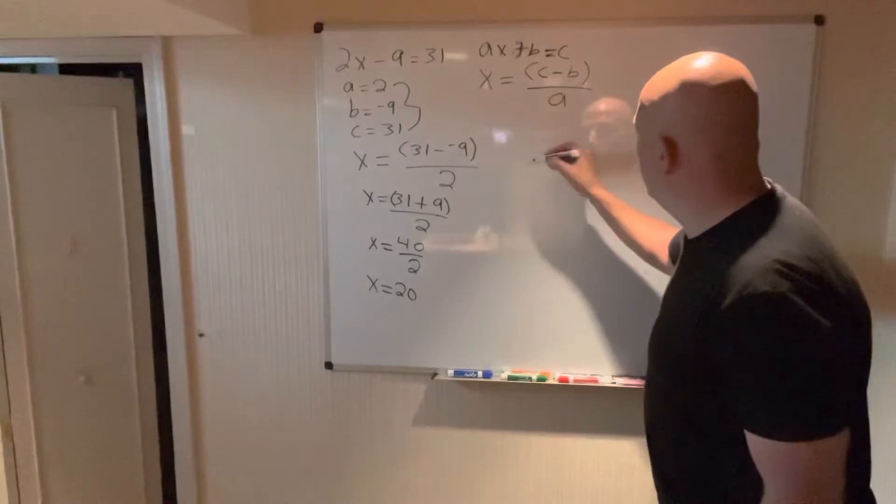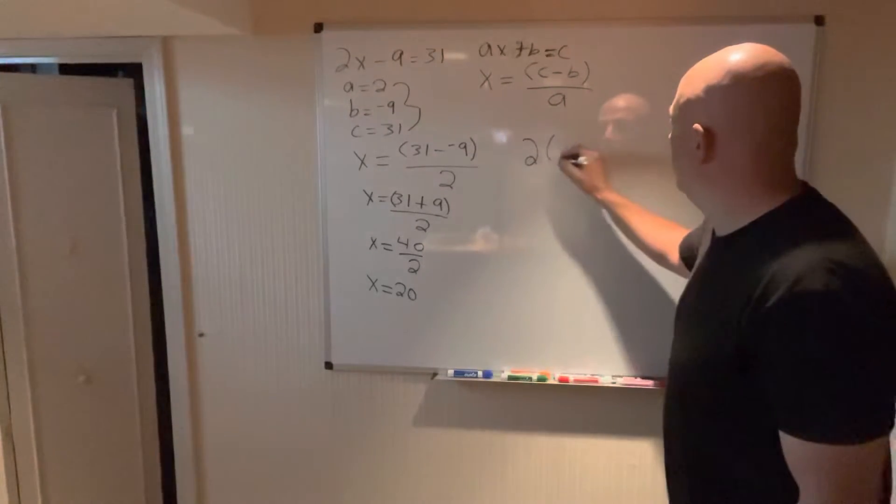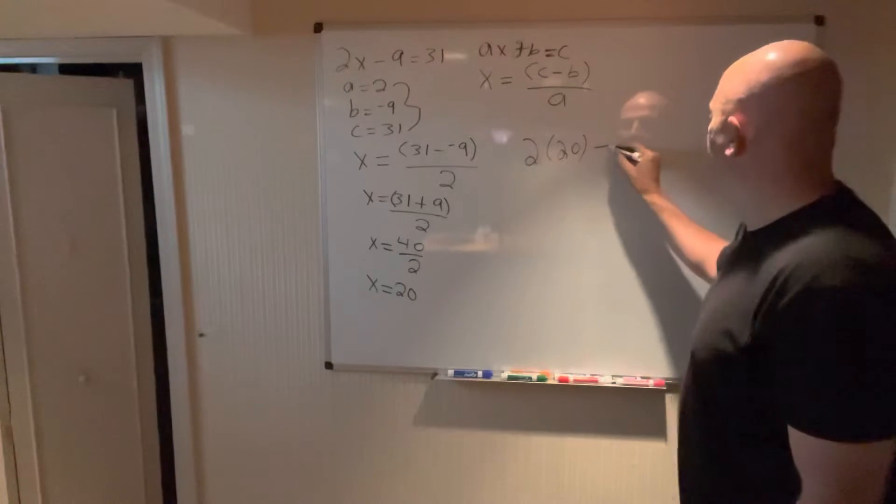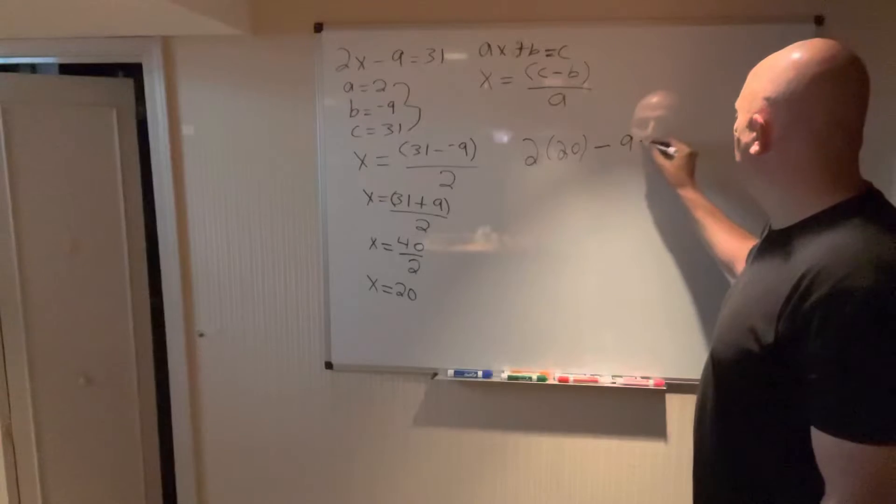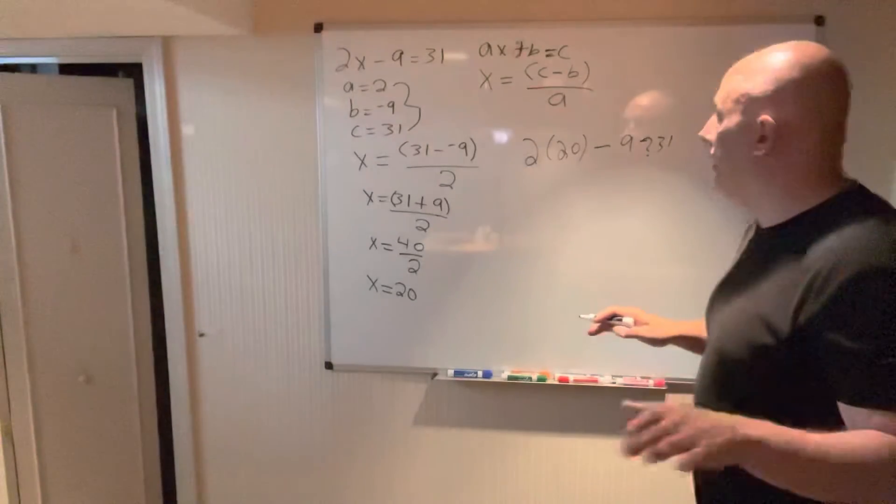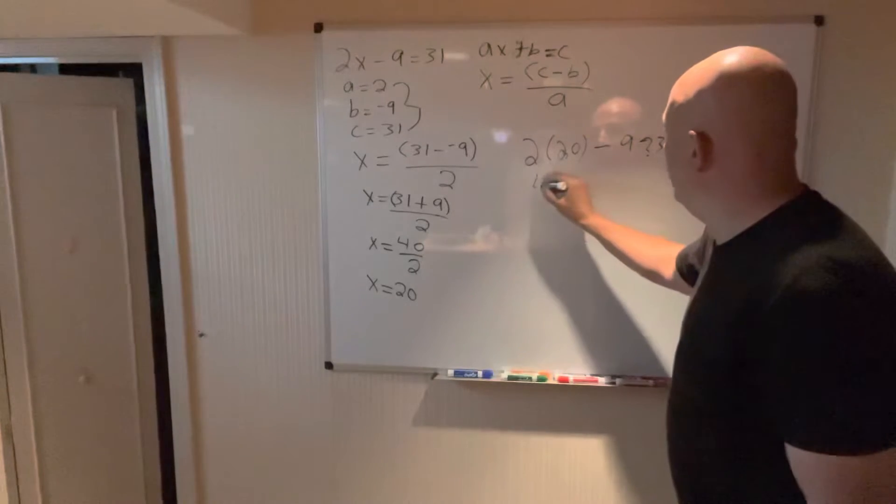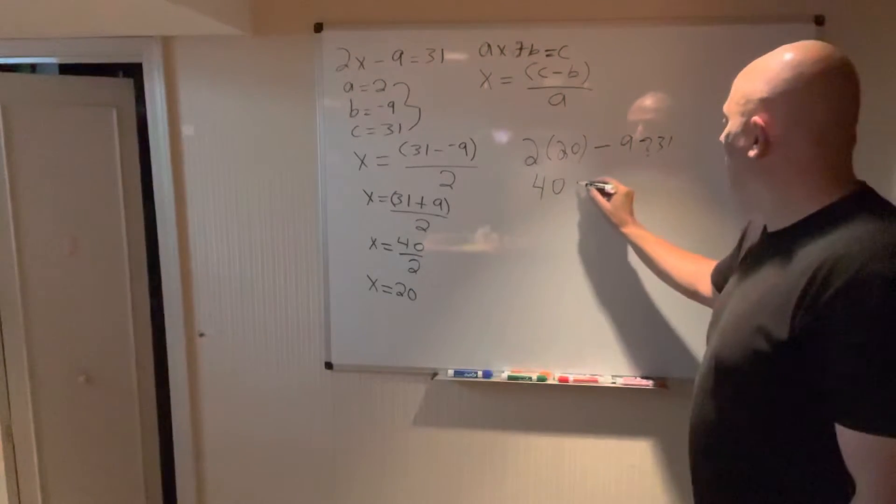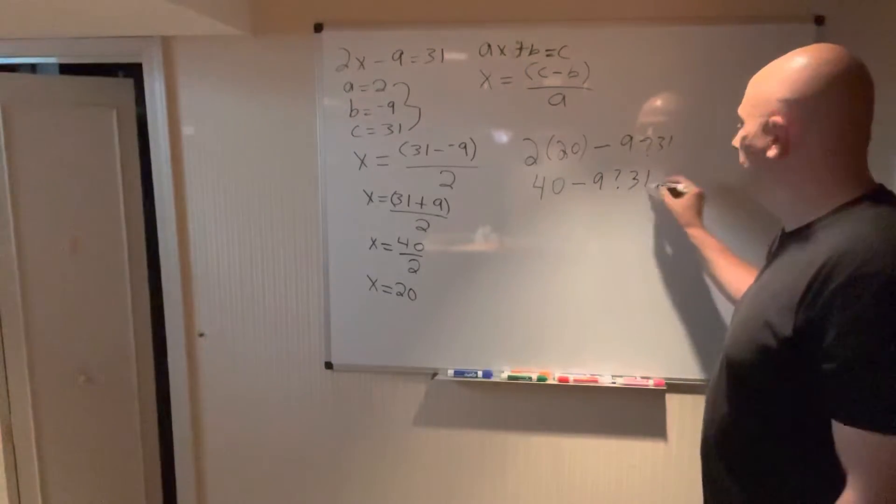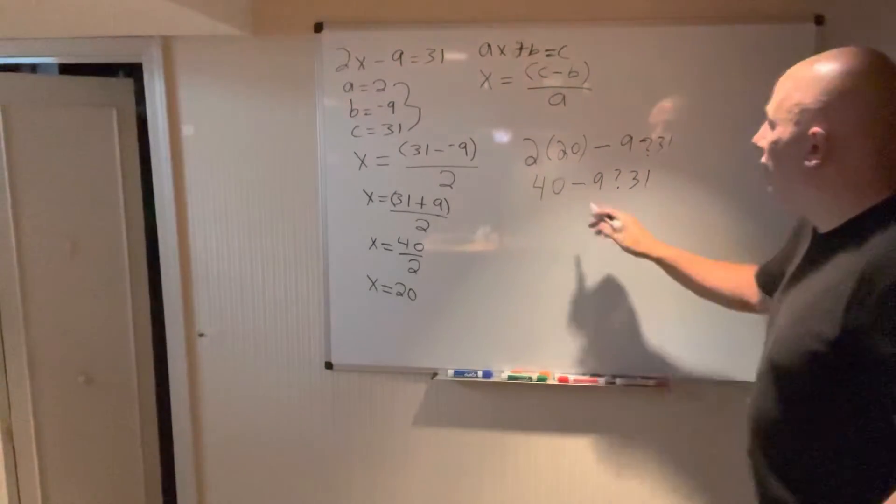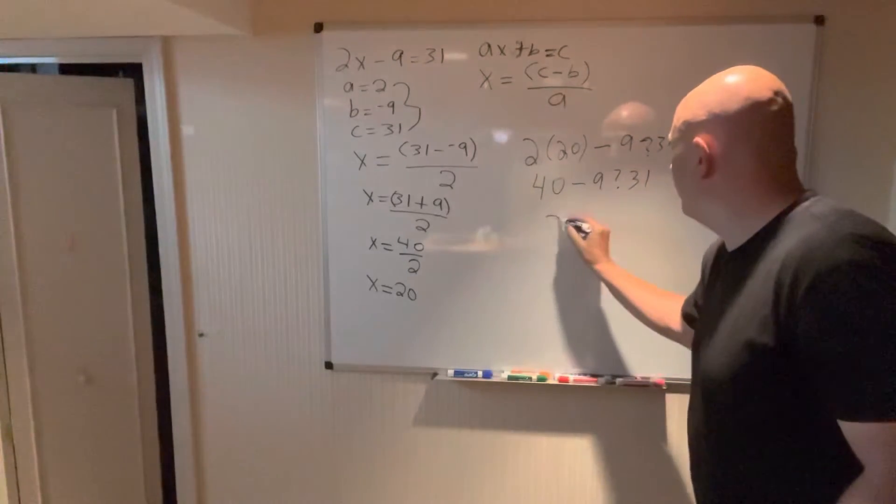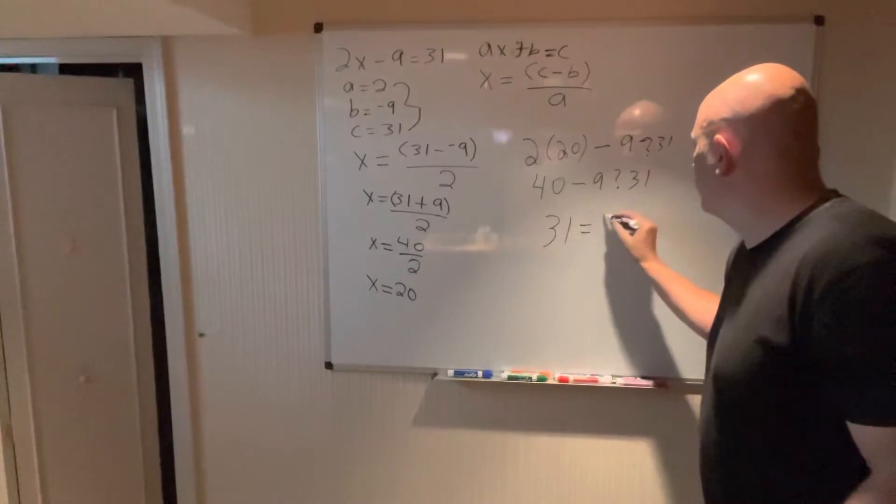So we take 2 times 20, which was our x value, minus 9. I'm going to put a question mark because we don't know if I'm telling the truth or I'm full of hot air. 2 times 20 is 40, minus 9, question mark 31. We're still testing the theory. 40 minus 9 is 31. Beautiful. 31 equals 31.